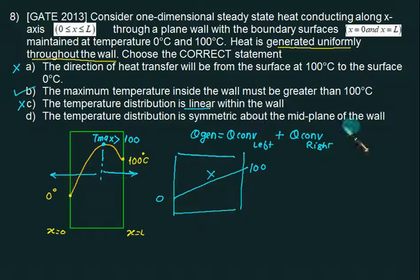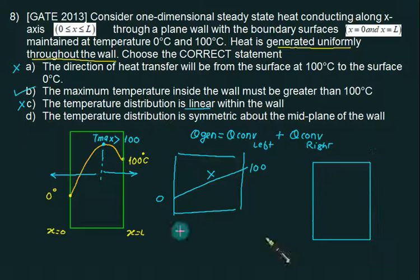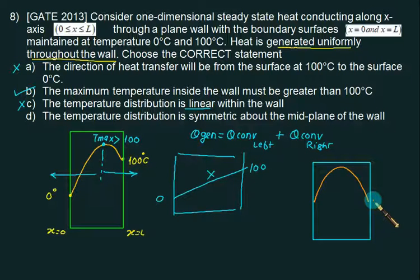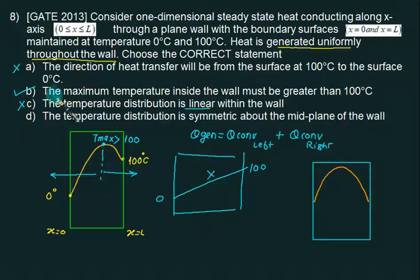Statement D says the temperature distribution is symmetric about the mid-plane. This is wrong because the two wall temperatures are different, so the distribution cannot be symmetric. Symmetry is only possible if both wall temperatures are the same. Therefore choice D is also wrong, and only the correct choice is B.